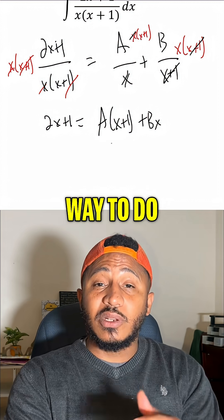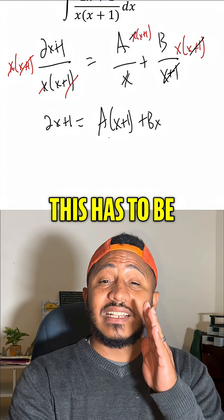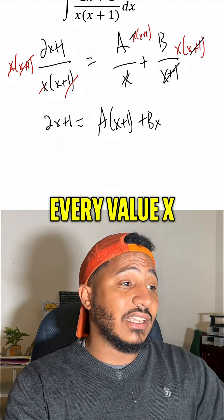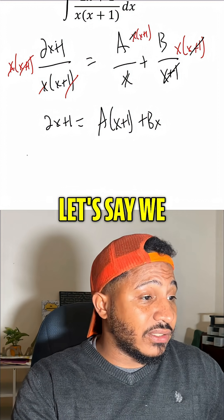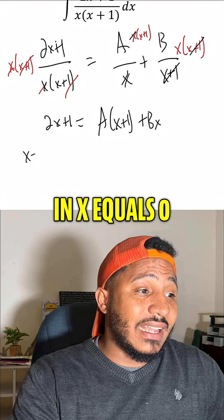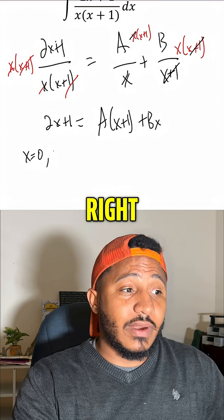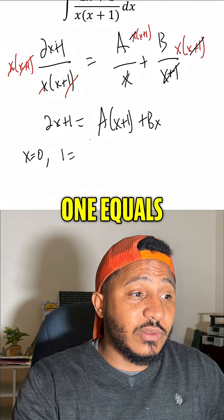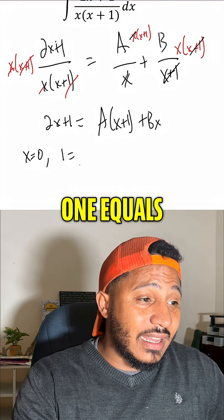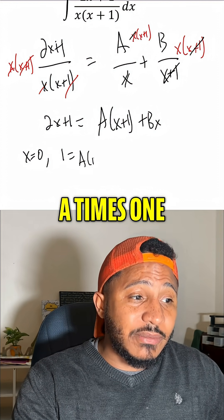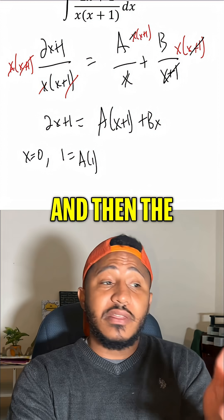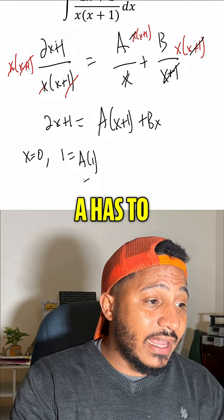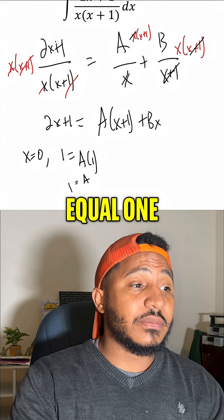A quick way to do this is to know that this equation has to be true for every value of x, so we can plug in convenient values. If we plug in x equals 0, we get 1 equals A times 1, and the B term goes away. So we know A has to equal 1.